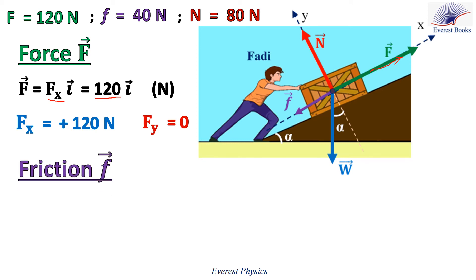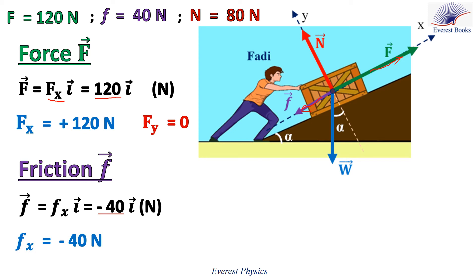Now let's study the friction force. The friction force is oriented along the negative x-axis, so it has no component along the y-axis. The x component of the friction equals minus 40 newtons and the y component of this force equals 0.